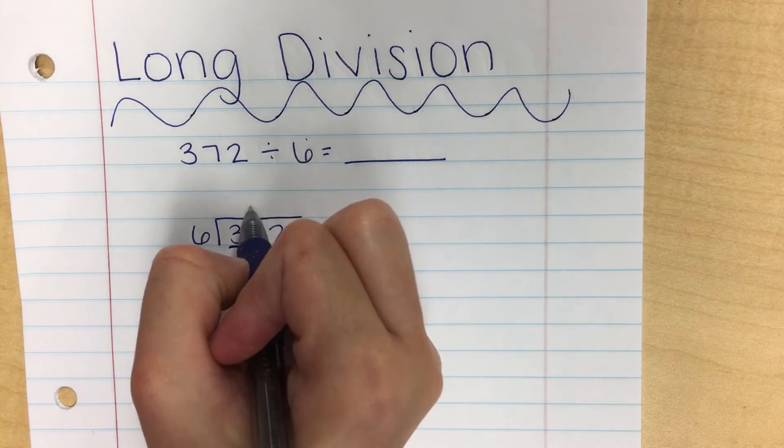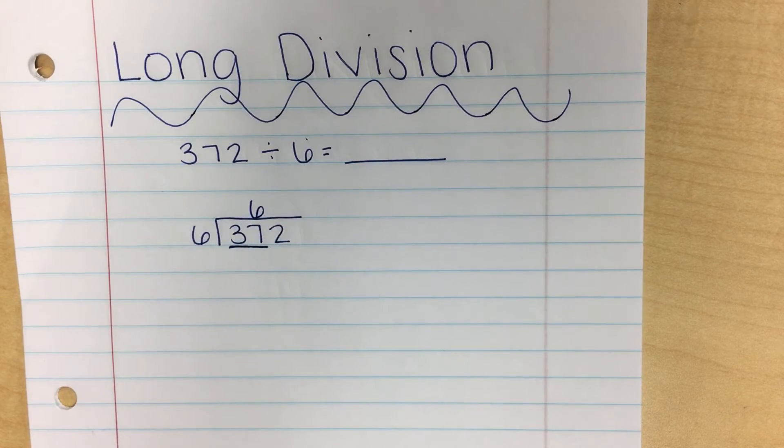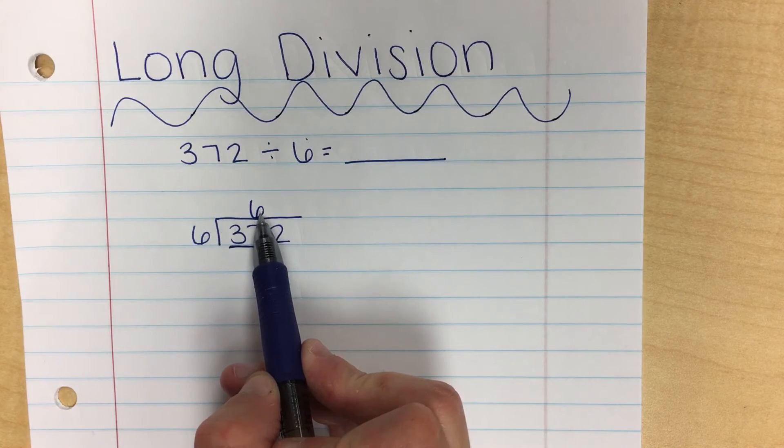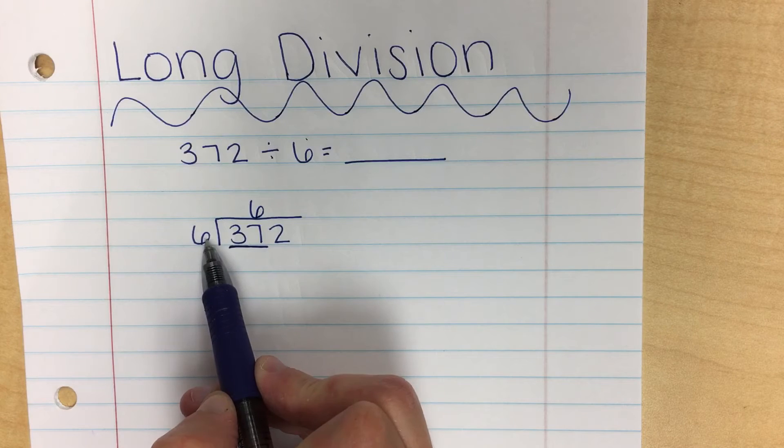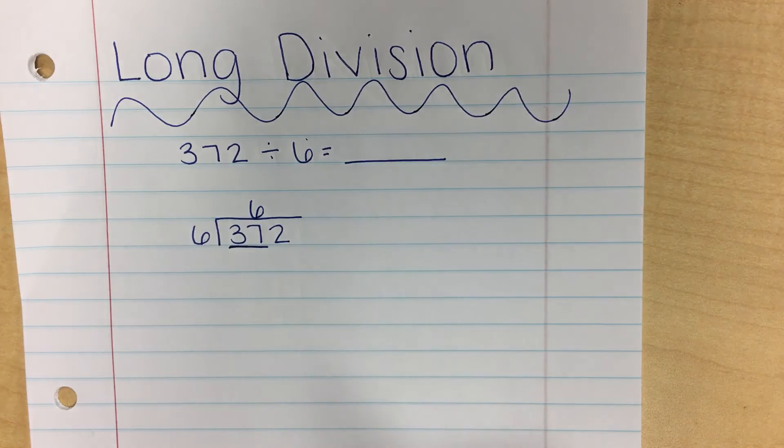We're going to write that at the top, right above the 7, and now my next step is to multiply. My 6 on the top times my divisor, which is 6. 6 times 6 is 36.